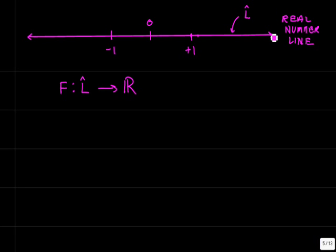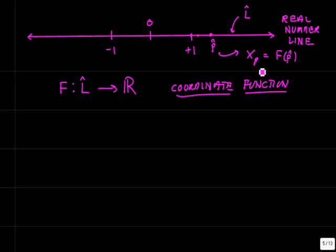This function F, the coordinate function, so every point on the line over here, here's a point P. There is a number, XP, that is the coordinate of the point P. And so we say XP is equal to F of P. So it takes geometric objects and converts them into real numbers. Since the line itself is a continuous geometric object, it follows that this function F is a continuous function.